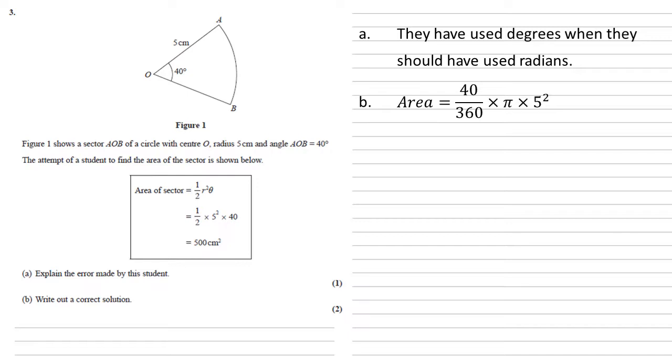So in this case, we've got the area equals 40 over 360 times pi times 5 squared, which gives us 25 over 9 pi square centimeters.